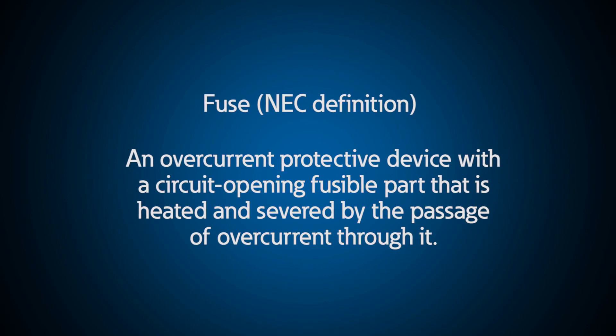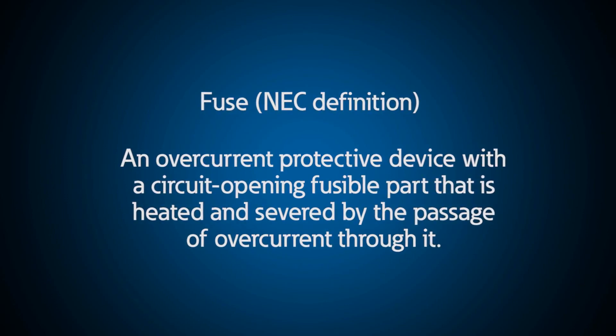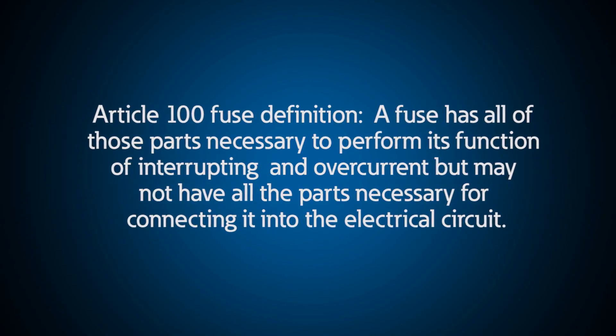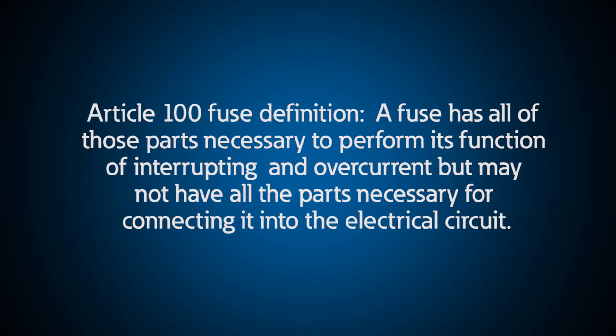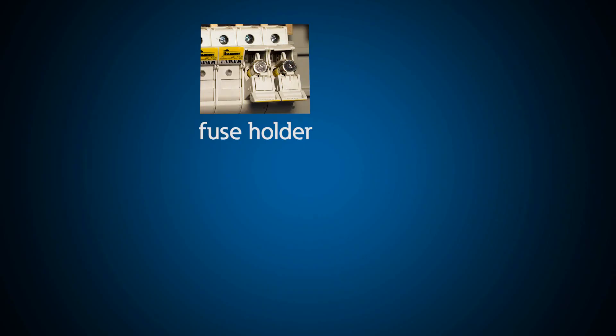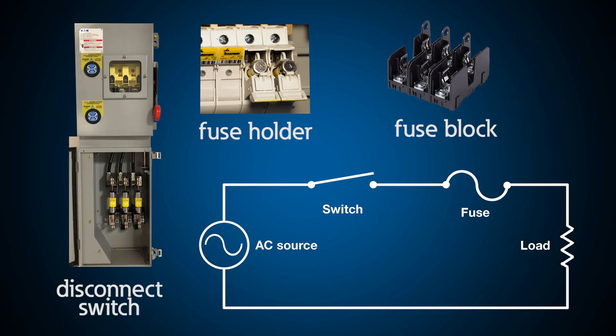The National Electrical Code defines a fuse as an overcurrent protective device with a circuit-opening fusible part that is heated and severed by the passage of overcurrent through it. The NEC notes that the fuse has all parts necessary to interrupt an overcurrent, but may not have all parts necessary to connect it into the circuit — requiring a fuse holder or fuse block and a switch to enable replacement.